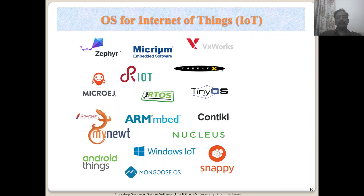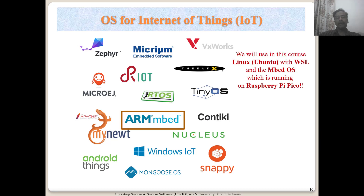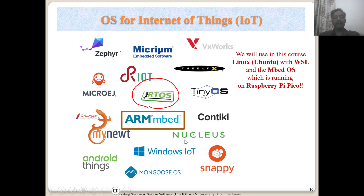IoT is most important and is coming up rapidly in recent times, with billions of devices going to be there in the future. Many of them do run operating systems as shown here. When we take up the Raspberry Pi Pico — an ARM-based board — it will be running an embedded OS on it. I also suggest looking at FreeRTOS, which is most popular in the real-time operating system world, shown in the middle. It has source code available so you can look at it and understand how a real operating system is implemented in C.